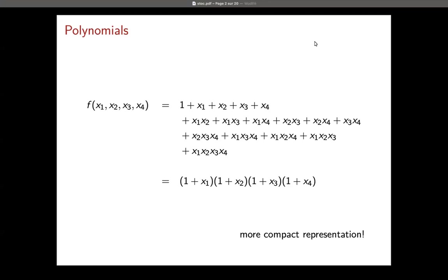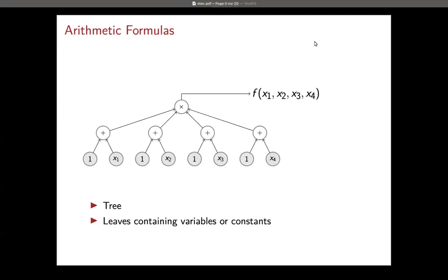So what is the underlying model of computation? It's arithmetic formulas. An arithmetic formula is a tree — a directed tree — with leaves labeled by either a scalar from a field or a variable, and internal nodes are labeled by addition and product. Each gate naturally computes a polynomial over that field and these variables, and there is an output gate — this is the polynomial computed by the formula.